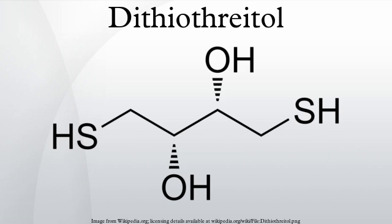2-Amino-1,4-dithiobutane is a newer dithiol reducing agent that somewhat overcomes this pH limitation of DTT. TCEP (tris(2-carboxyethyl)phosphine HCl) is an alternative reducing agent that is more stable and works even at low pH.